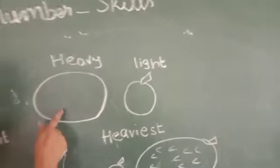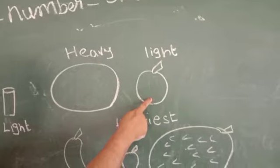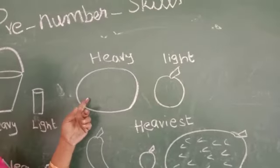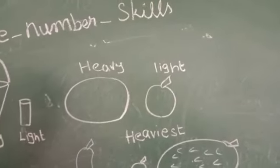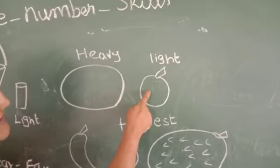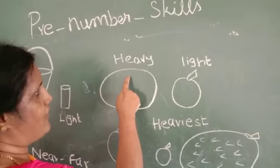See children, now two fruits are here. One is watermelon and one is apple. If I ask anyone to carry this, which one will you carry easily? Very good, it is apple, because watermelon is very big.